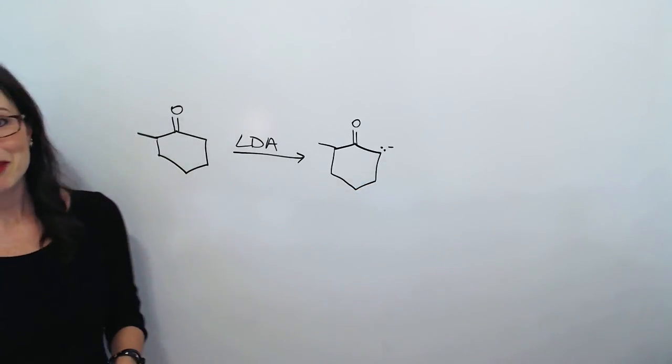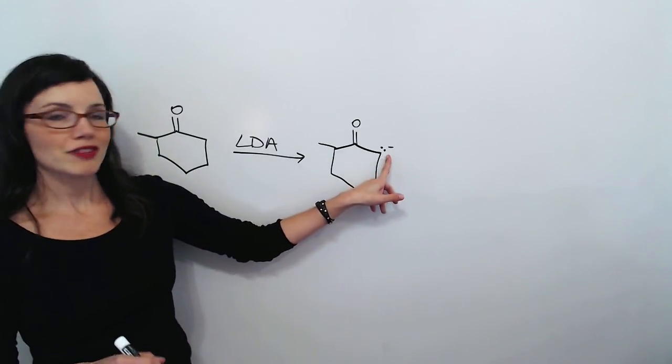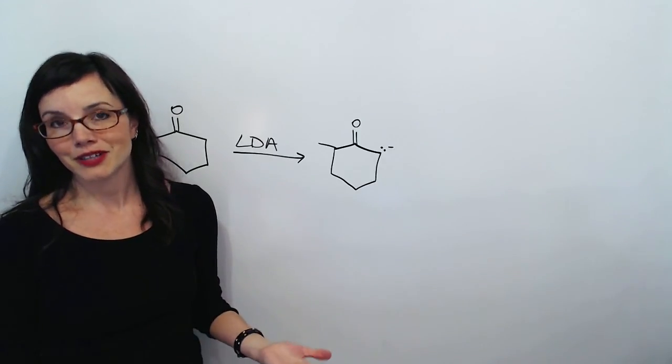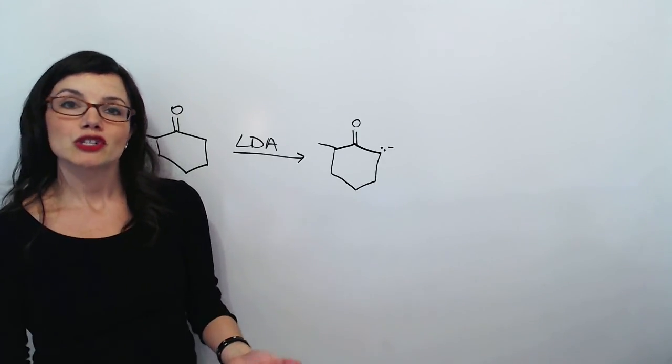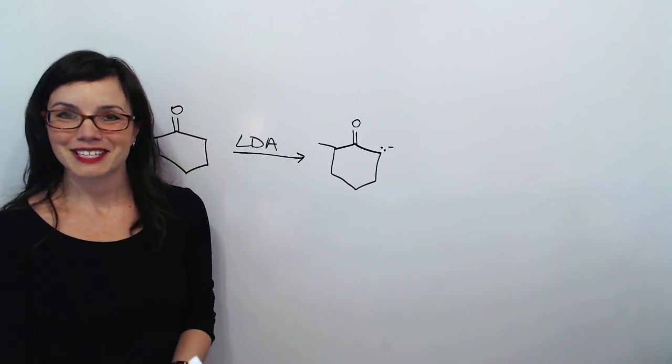Our next step is to draw a bond between the alpha carbon and the carbonyl carbon of the ketone or aldehyde that we're working with. So, take a moment and draw that connection and then let's come back and see what you've got.